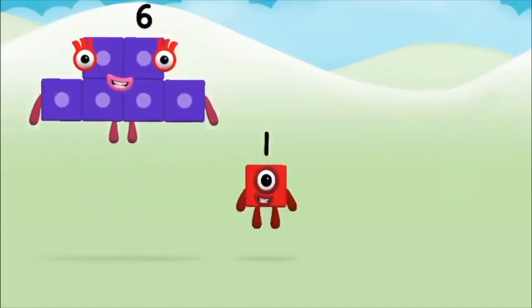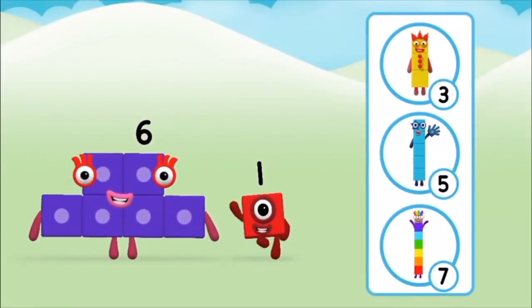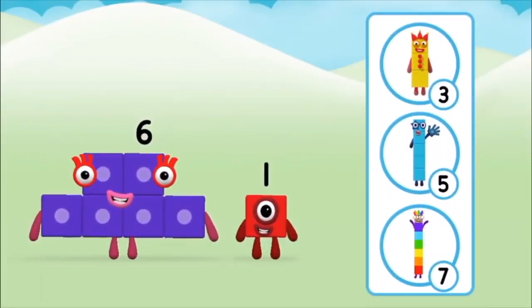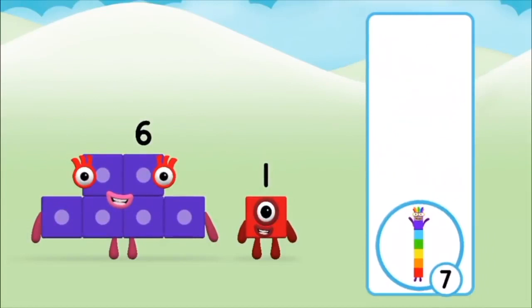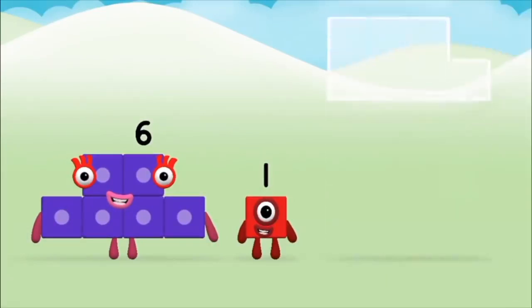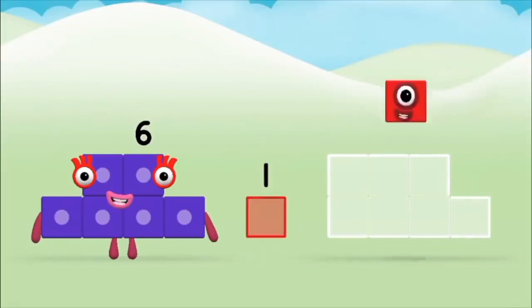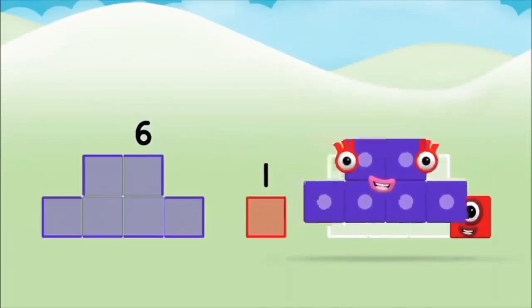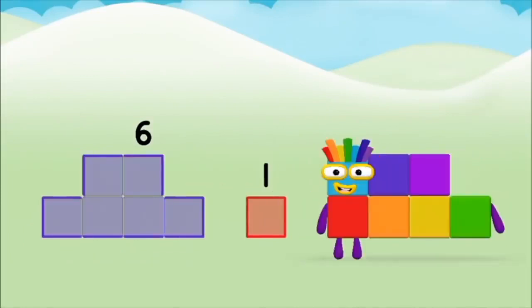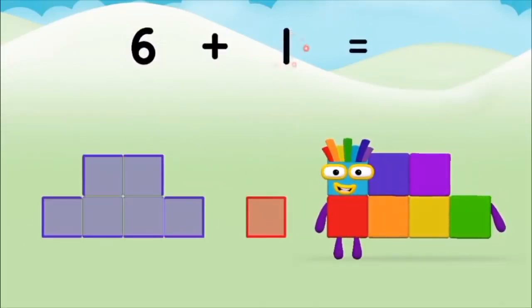Do you know which number block you'll make when you add these two number blocks together? That's the correct answer! Now add the number blocks together: one, six, one, six — six plus one equals seven!